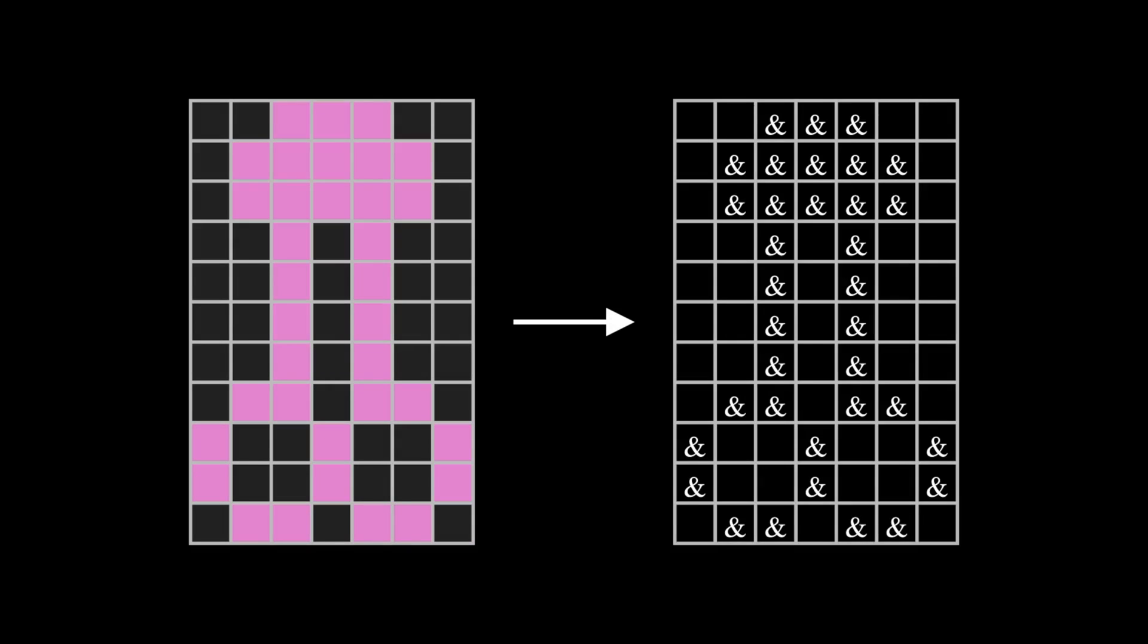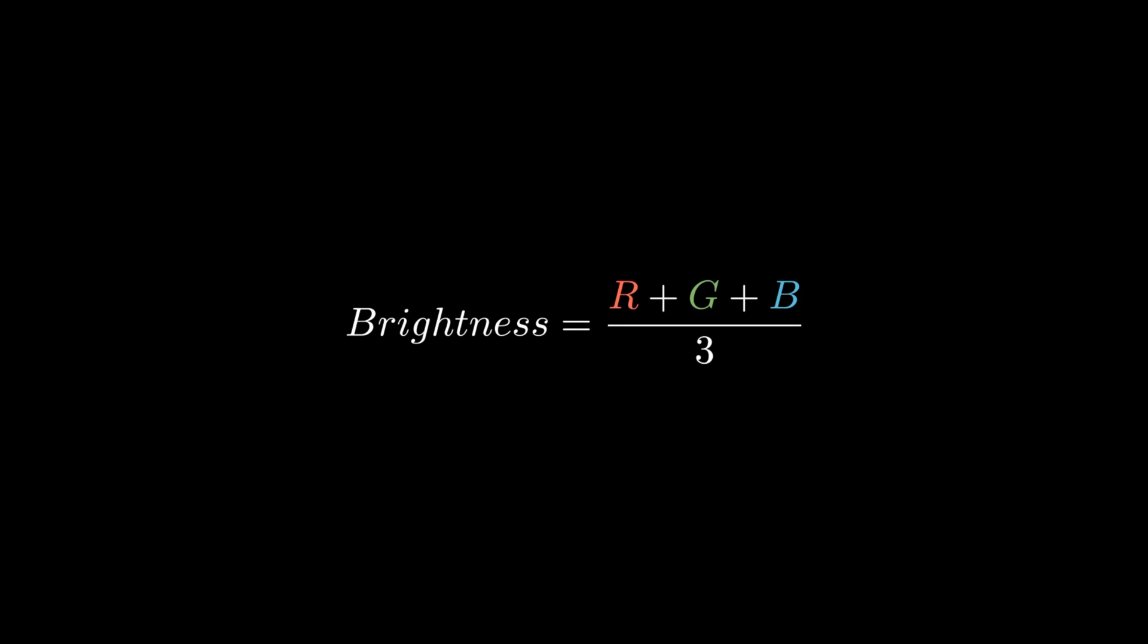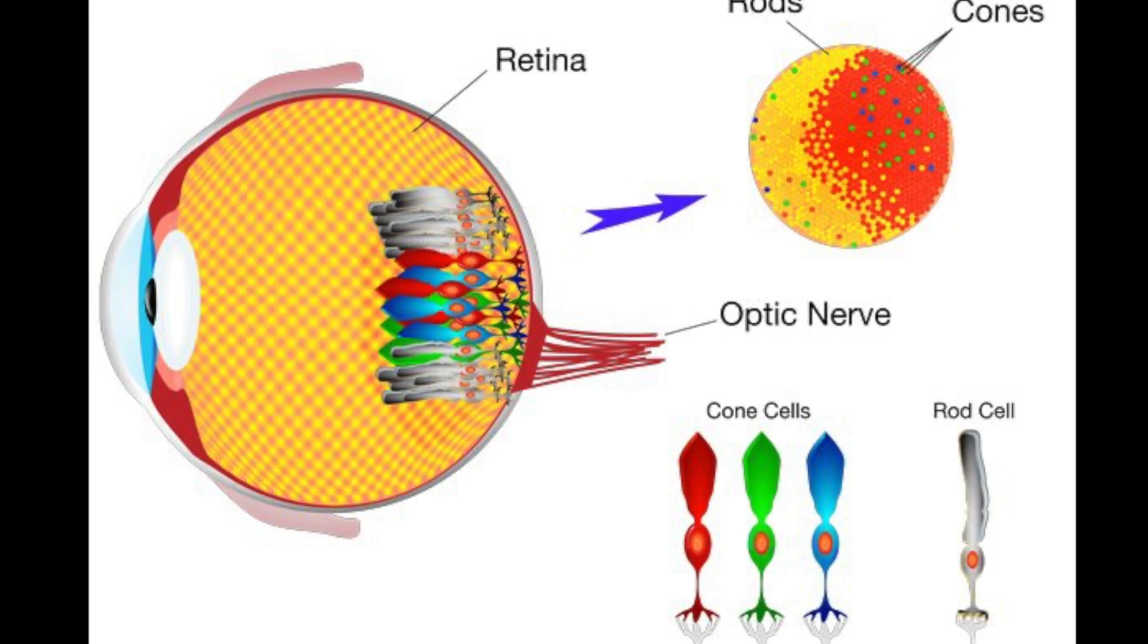Cool. So now we know what an image is and we know what a pixel is. But how do we go from pixels to characters? Well, we don't really care that much about the color of a pixel. What we actually care about is its brightness.